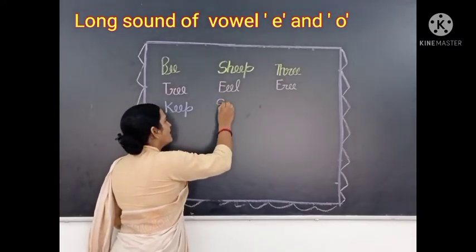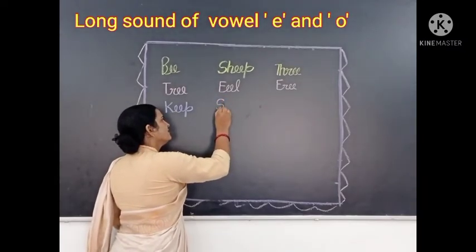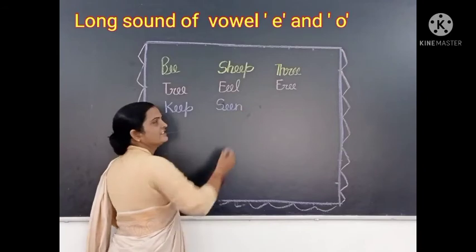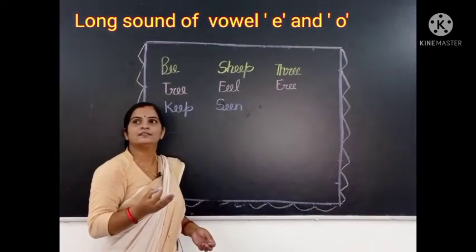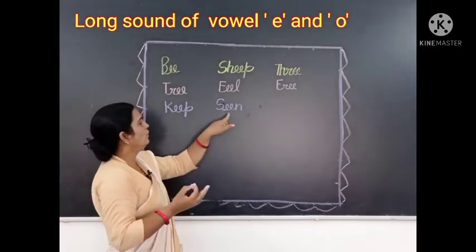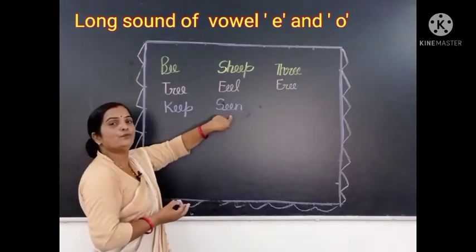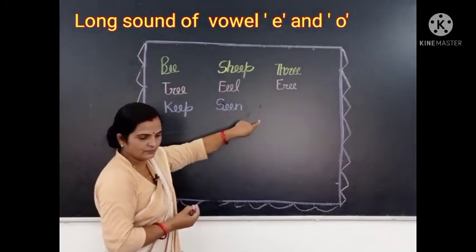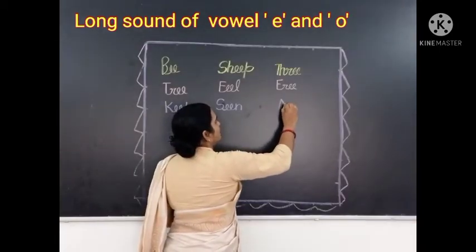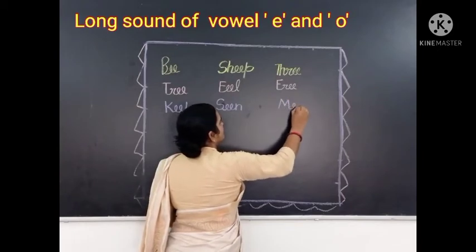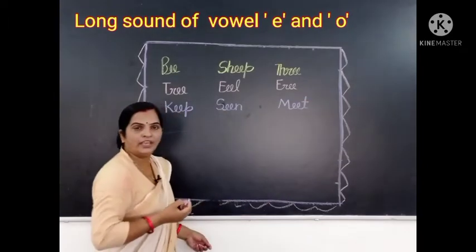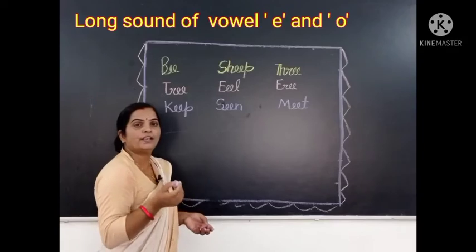Seen. S-double E-N. Seen. Okay? This is a long sound of vowel E word. Now we will write the next word: Meat. M-double E-T. Meat. Okay? Now we will write the next word.